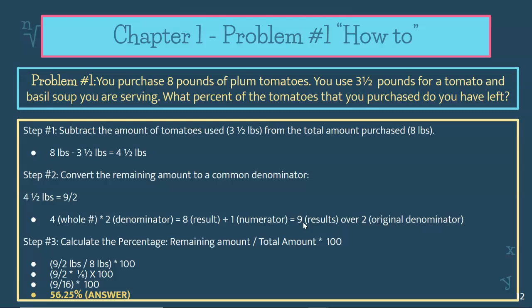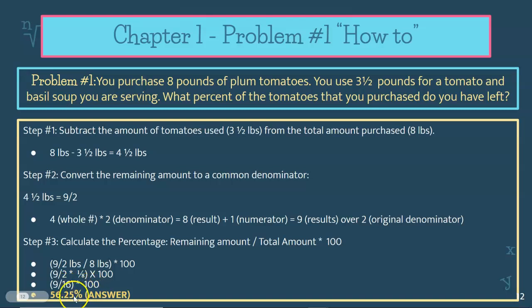Now you can calculate the percent. So the remaining amount nine over two divided by the total amount, which was eight pounds, times 100. So you're going to multiply nine over two by one eighth. Eight pounds becomes one eighth. Nine over two times one eighth — the denominators do not match, so you need to make the denominators match. You get nine over 16. So you do nine divided by 16 times 100, and you get 56.25%. That is your answer.